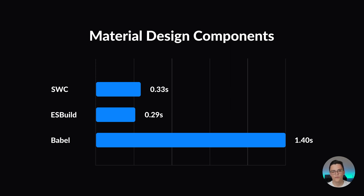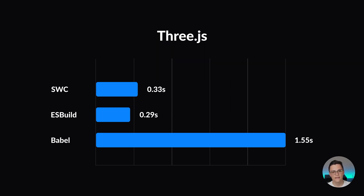One important remark here is that the Material Design Components library is written in TypeScript. Three.js is very roughly the same size as the Material Design Components library, and here we see a very similar picture, although Three.js is not written in TypeScript but in vanilla JavaScript.